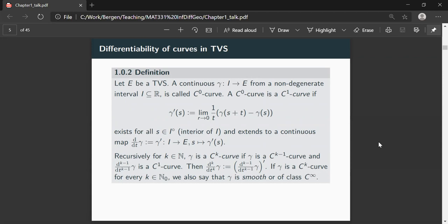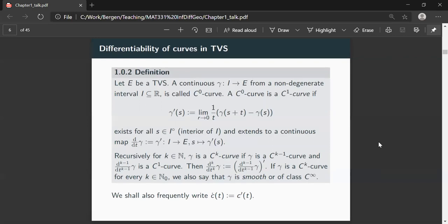One frequent notation, which is perhaps known for people coming from physics: we also write gamma dot or c dot for c prime, for the time derivative of such a curve. So this is just a definition. If we have a topological vector space, we can define what it means for a curve to be differentiable.